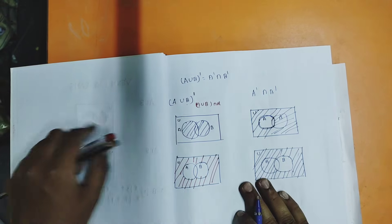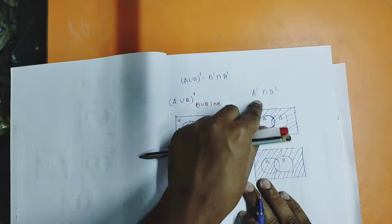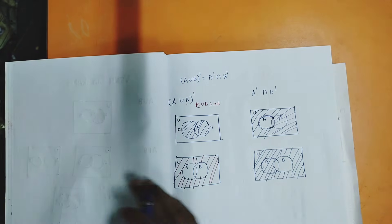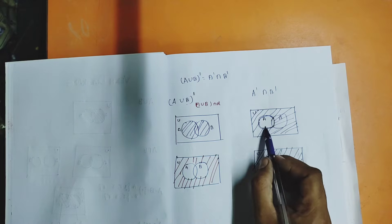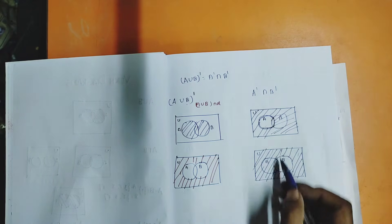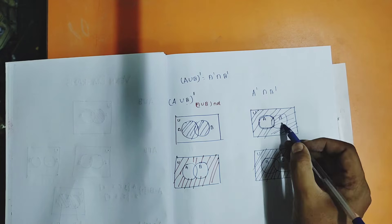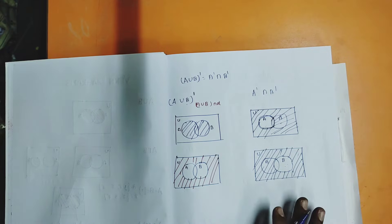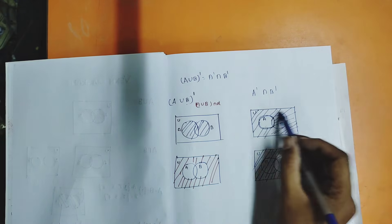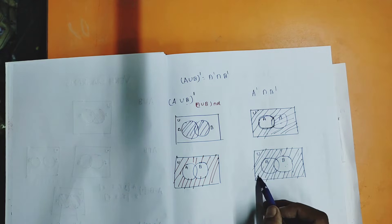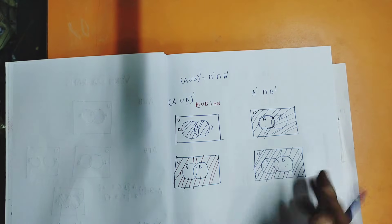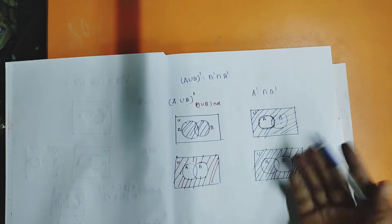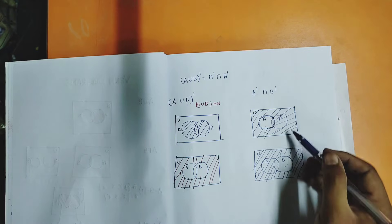Now what is the intersection of A complement and B complement? Intersection means what is common to both. Let us see the common shaded portion for both diagrams. Here in A complement, some regions are shaded and some are not. In B complement, some are shaded and some are not. What is the only common thing — what is shaded in both? The common shaded portion is the outside region only.